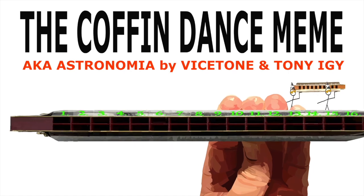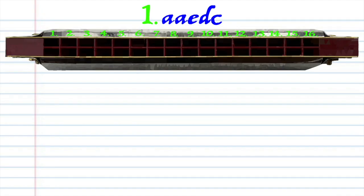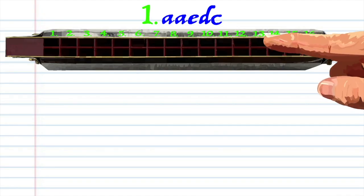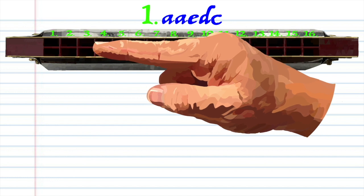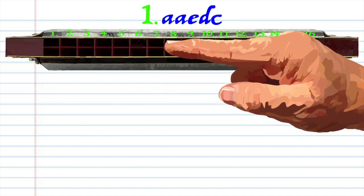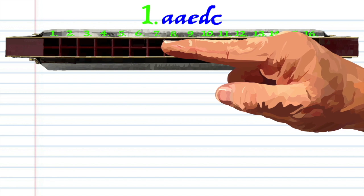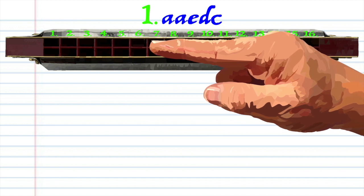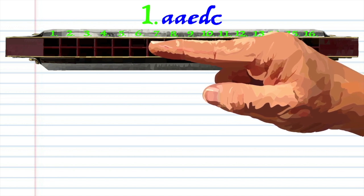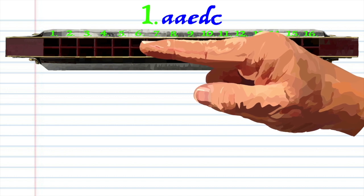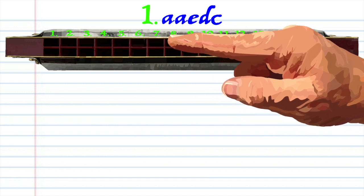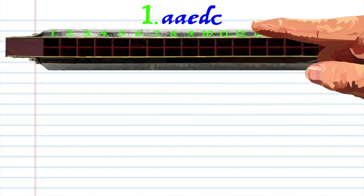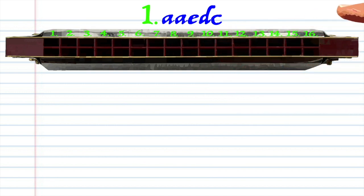Let's take a closer look at phrase 1. Breathe in through 2 twice, blow into 7, breathe in through 6, and blow into 5. Practice this until you end up with something that sounds like this.